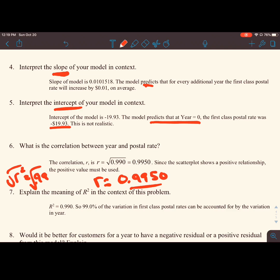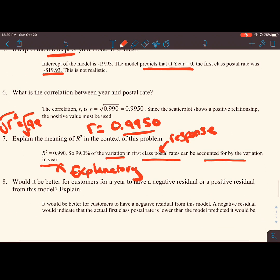If r squared is 99%, then 99% of the variation in first class postal rates can be accounted for by the variation in year. Remember, this is your response or your predicted variable, and year is your explanatory variable. Just plug into that formula that I gave you, and you'll be good.